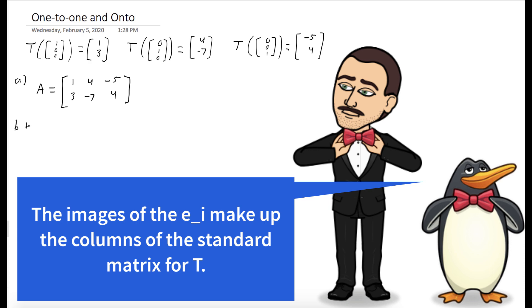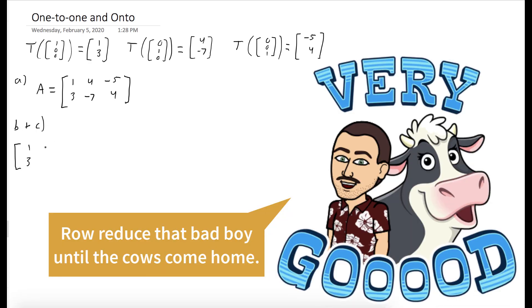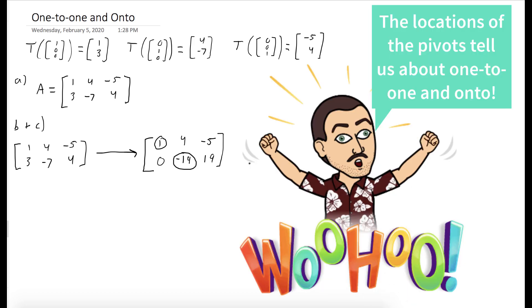On to the next parts. We want to see if our transformation is one-to-one or onto. What this boils down to is row reducing and looking at where the pivots are. We row reduce and we see that we have pivots in the first and second rows and the first and second columns, but not the third column.